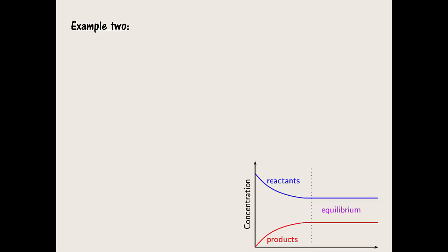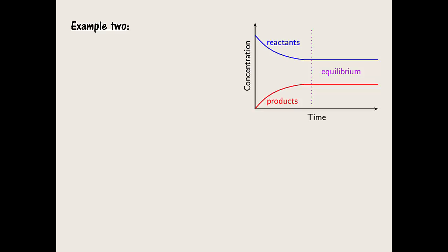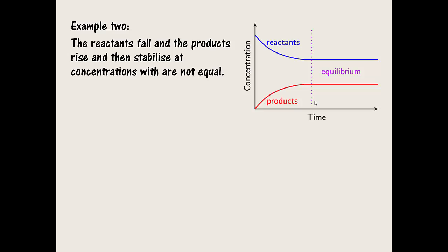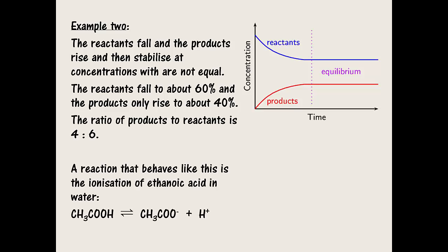In our second example, the relative amount of reactants only falls to about 60%, and the relative amount of products rises to only about 40% when equilibrium is reached. So, this reaction has not progressed very far at all, before the relative amount of reactants and products stabilizes at equilibrium. The reactants fall and the products rise and then stabilize at concentrations which are not equal. In this reaction, the ratio of products to reactants would be 40-60. In other words, 2-3. Ethanoic acid molecules dissolved in water is an example of a reaction that behaves in equilibrium like this.